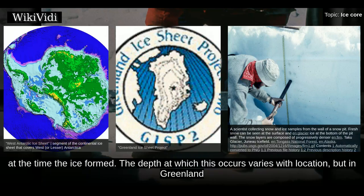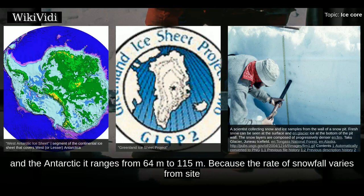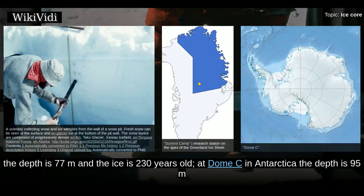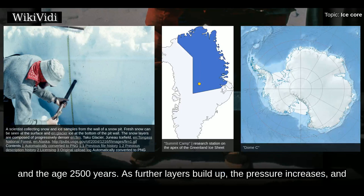At the time the ice formed, the depth at which this occurs varies with location, but in Greenland and the Antarctic it ranges from 64 to 115 meters, because the rate of snowfall varies from site to site. At Summit Camp in Greenland, the depth is 77 meters and the ice is 230 years old. At Dome C in Antarctica the depth is 95 meters, and the age 2,500 years.